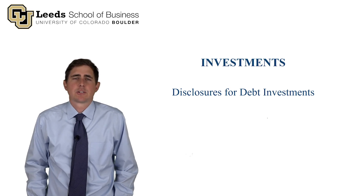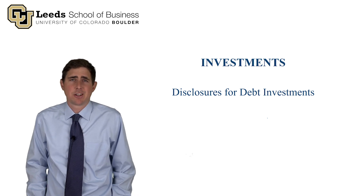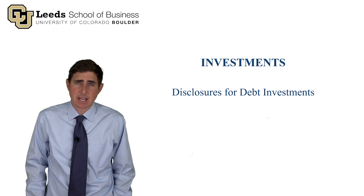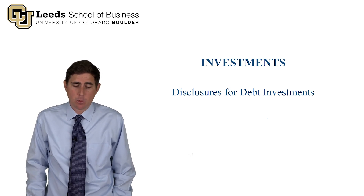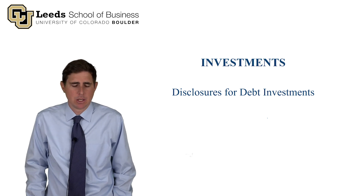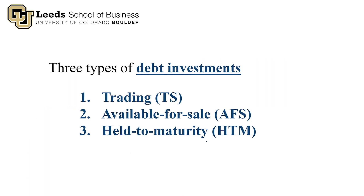In this video, we're going to go through the disclosures for companies that make investments in the debt securities of other companies, and we'll use an example company. It's kind of difficult to find an example company with all three types of debt investments, so we'll just talk about it. Let's remind ourselves of the three types of investments in debt securities: there's a trading security, an available for sale security, and a held to maturity security.